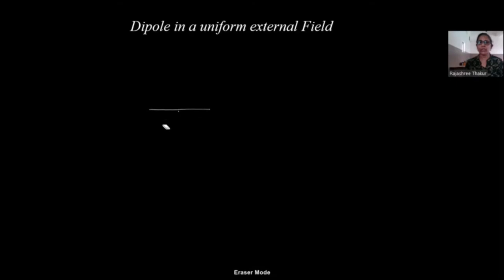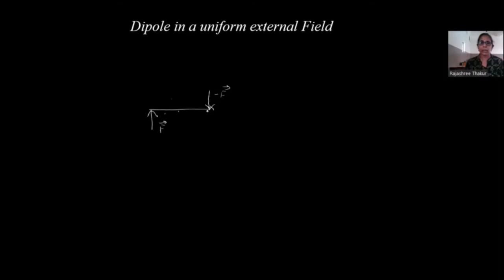Now if I apply force F at two different positions — say at the end points — they are equal and opposite, but their line of action is not the same. They are both applied on the same body at two different positions, so they don't share the same line of action. These two equal and opposite forces applied at different positions form a couple.